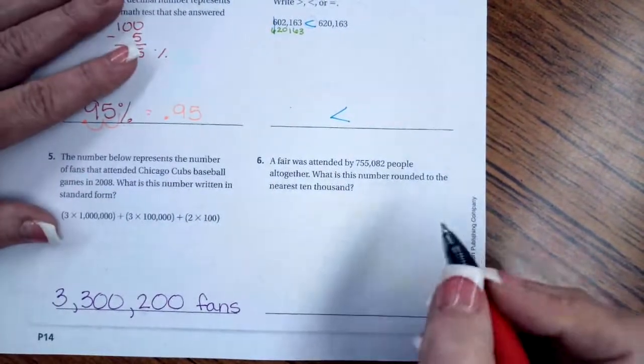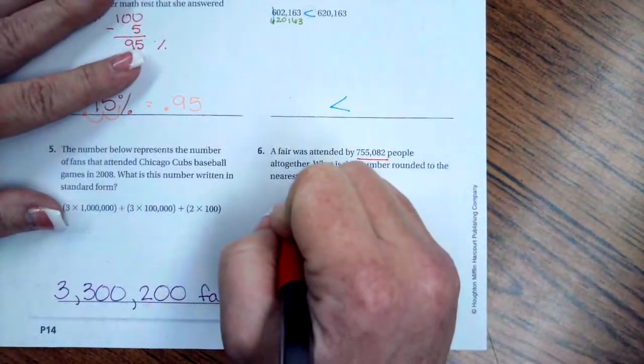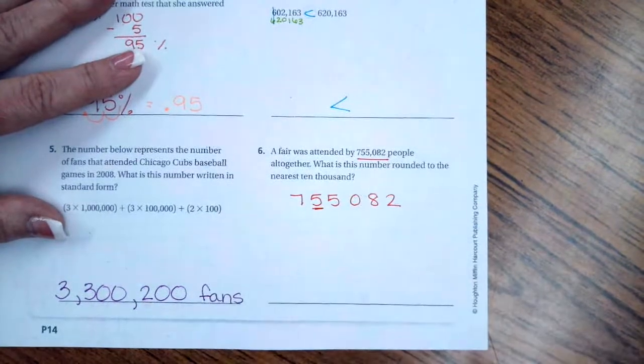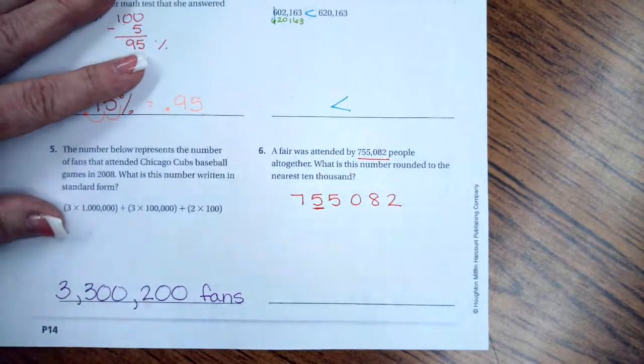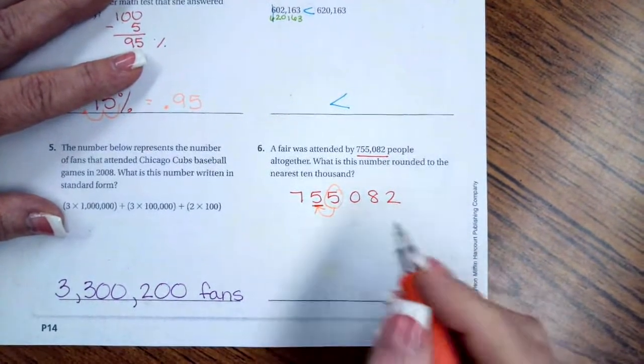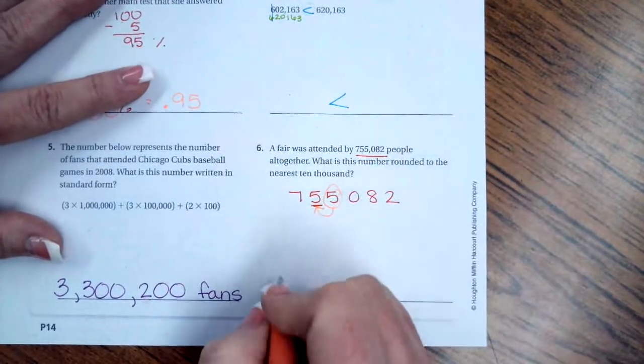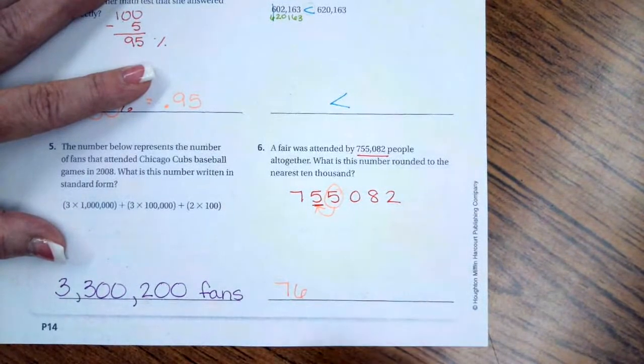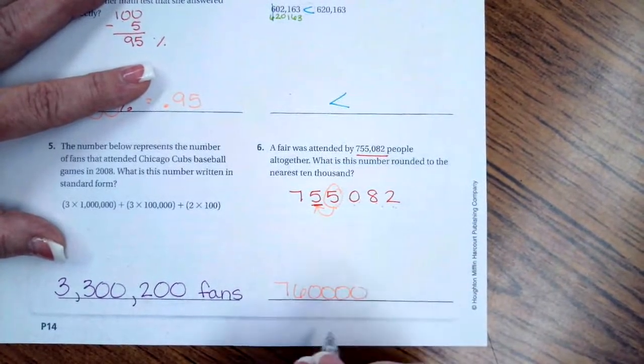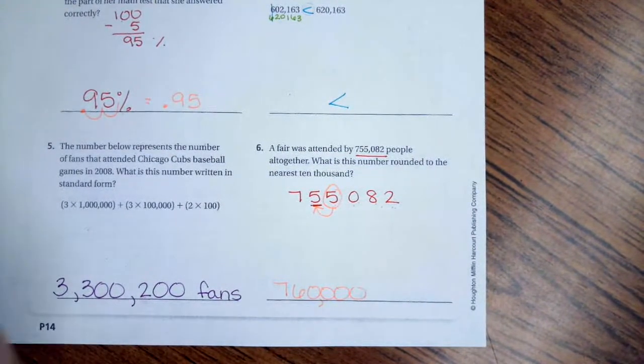A fair was attended by 755,082 people all together. What is this number rounded to the nearest ten thousand? So I'm going to rewrite the number down here. Ten thousands would be right here, so I need to look at the number that's right next door to tell me if that number needs to go up or stay the same. Remember, if it's five or bigger it goes up. If it is four or less it stays the same. So it is a five - well five and bigger it goes up. So now I'm going to keep my seven but my five is going to go to a six. Now every number after that is going to become a zero, so I have one, two, three, four numbers: one, two, three, four zeros. There is my comma.